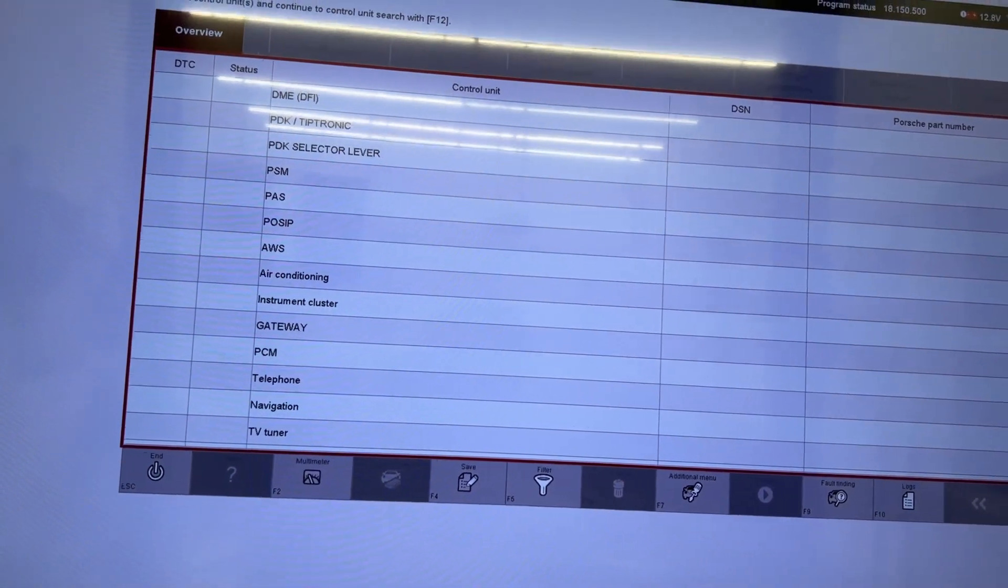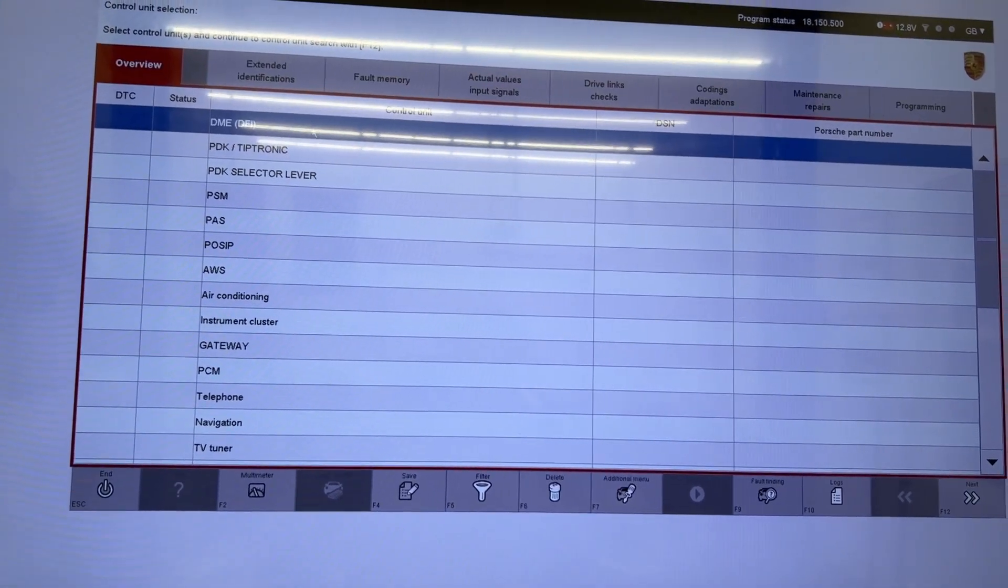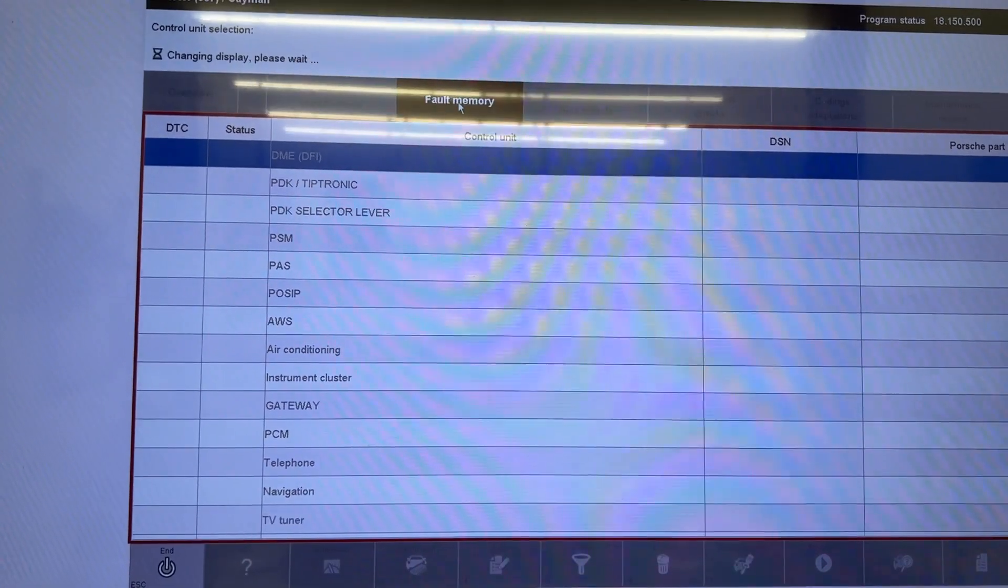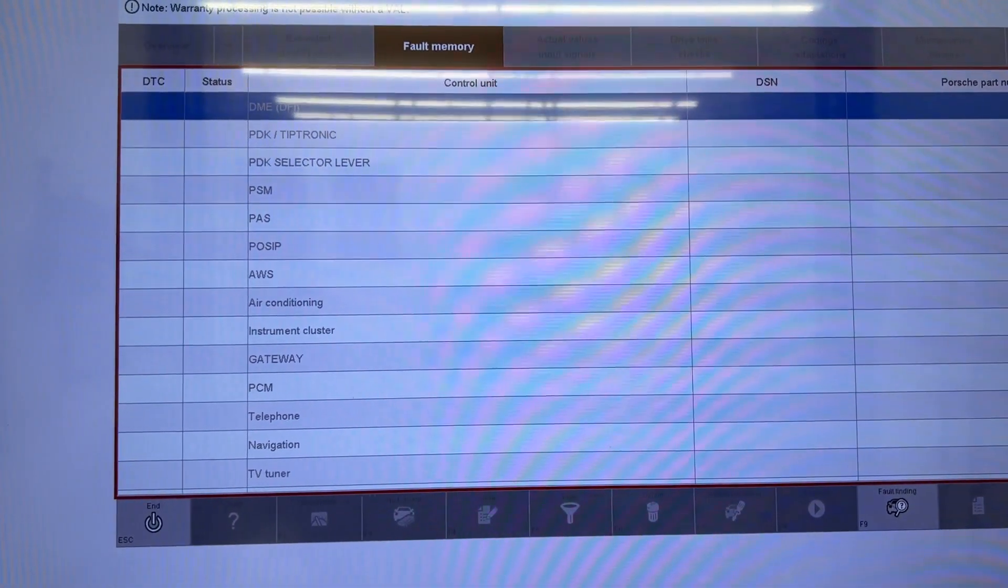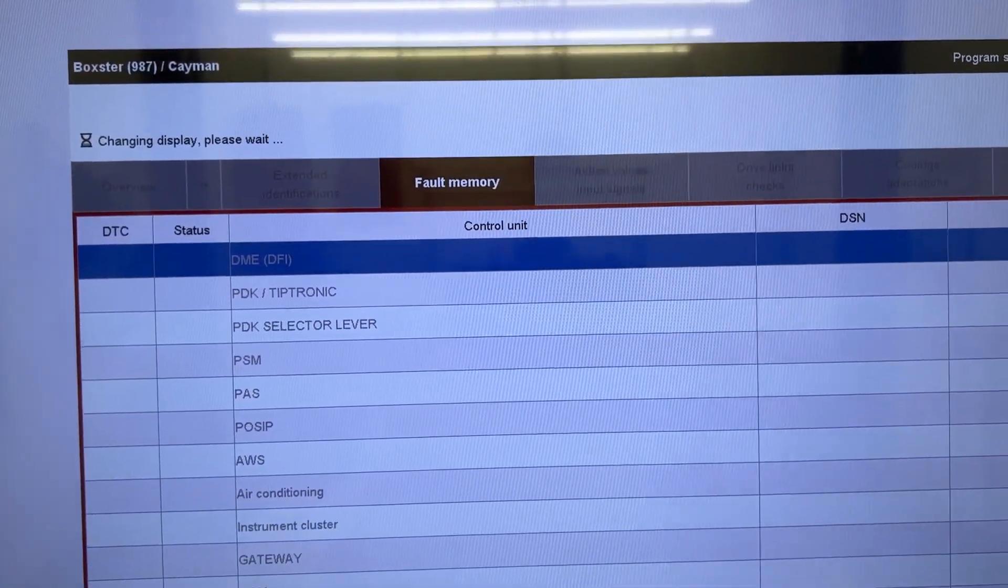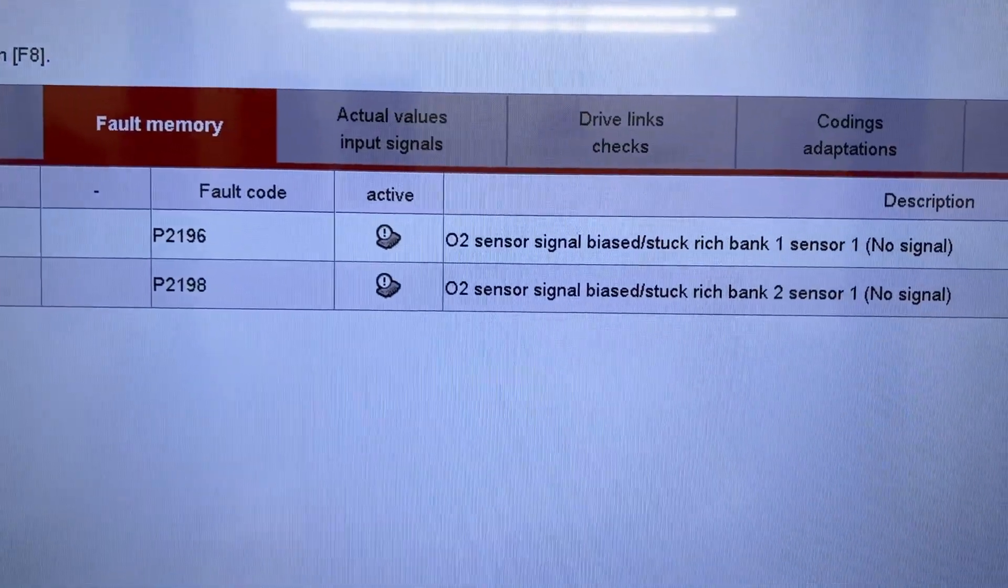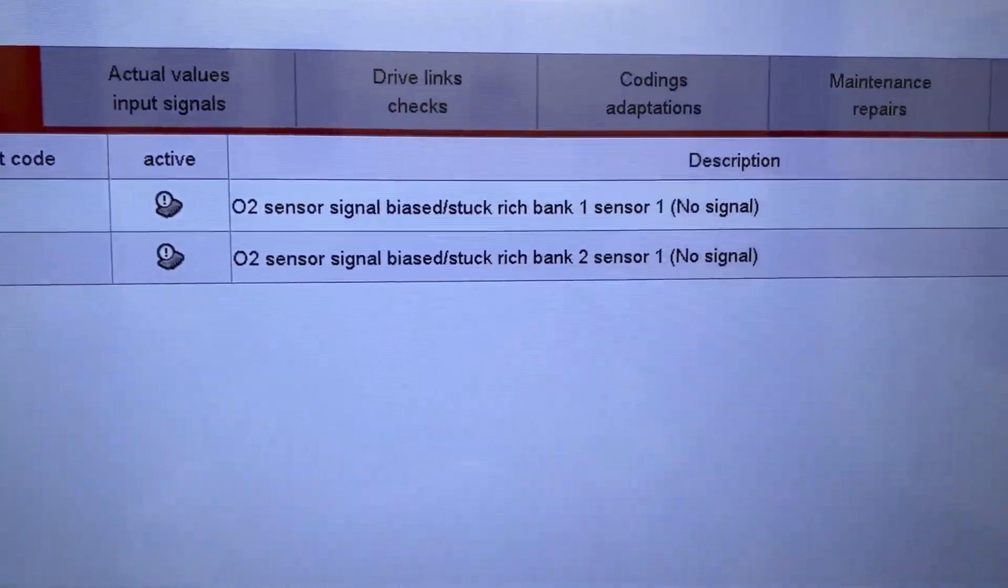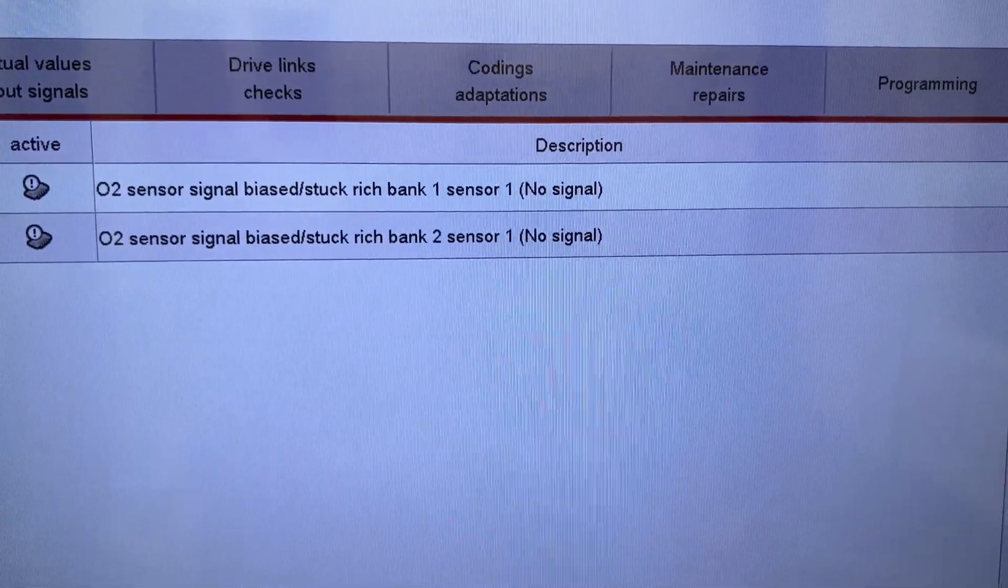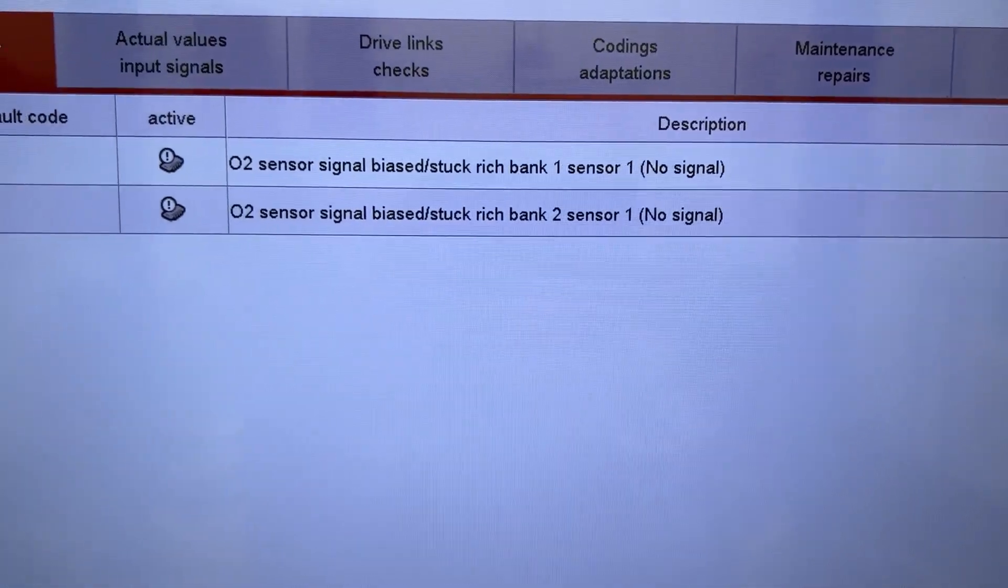All right, the first thing I want to do, and this thing fires up, is I'm going to select the DME and I'm going to check the fault memory to see what our fault code is right now. Okay, so I have a P2196 and a P2198. The O2 sensor signal stuck rich on both the bank one and bank two sensors.